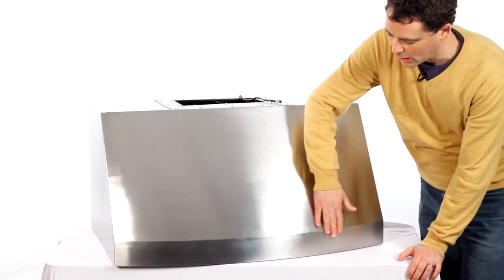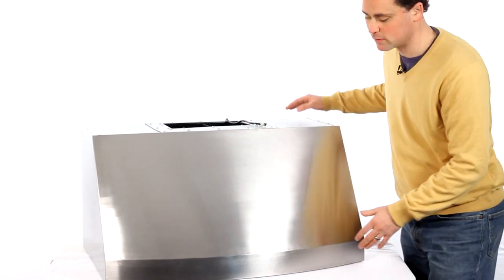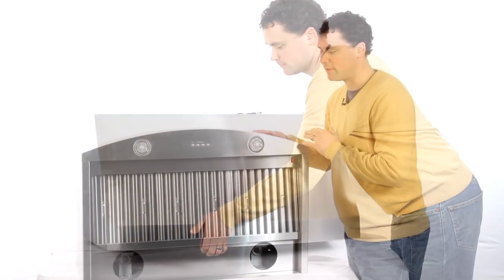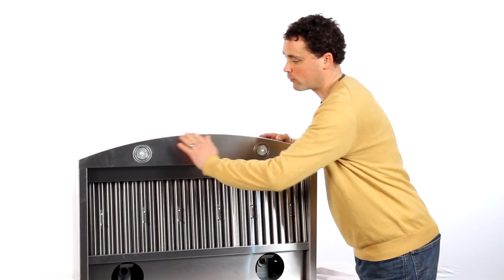The front of this range hood bows out beautifully with this nice curve. You can't really see it very well from this angle so I'm going to flip it back. Now you can see that bowed front a little bit better and you can see they've done a really beautiful job.